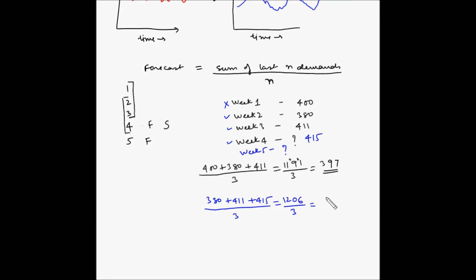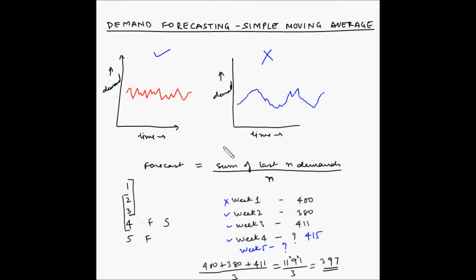This gives us the forecast for week 5. Now the big question in this method of forecasting is: how many periods of past demand should be used in order to calculate the average?